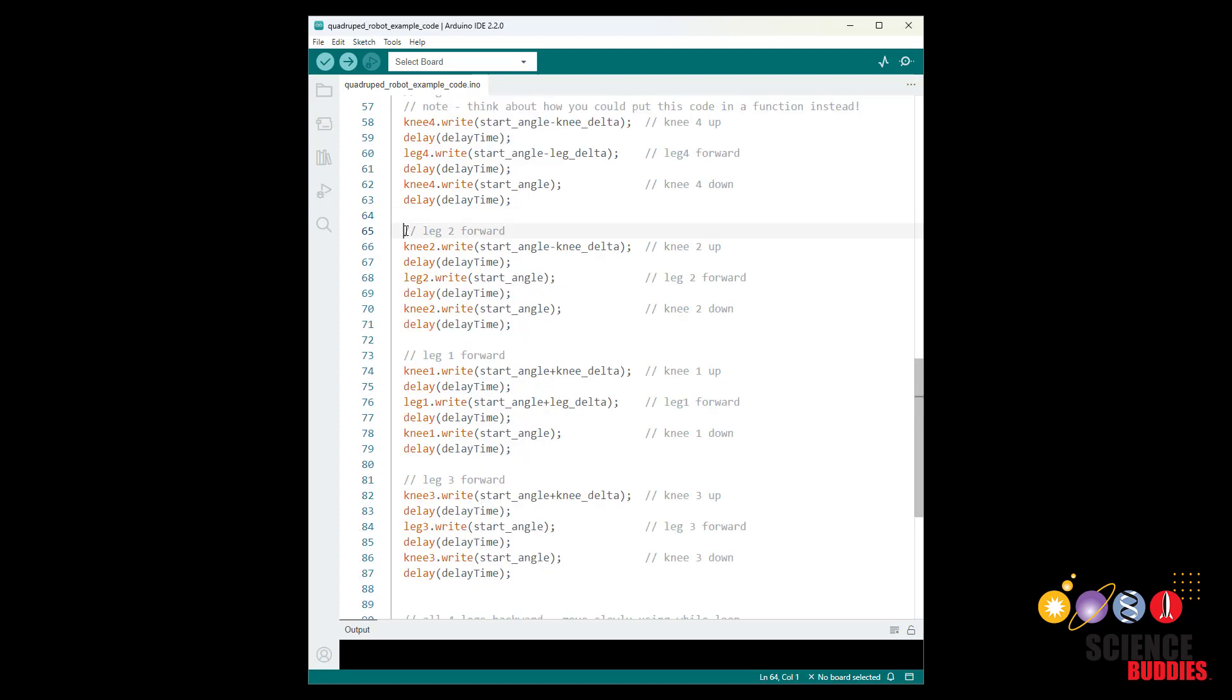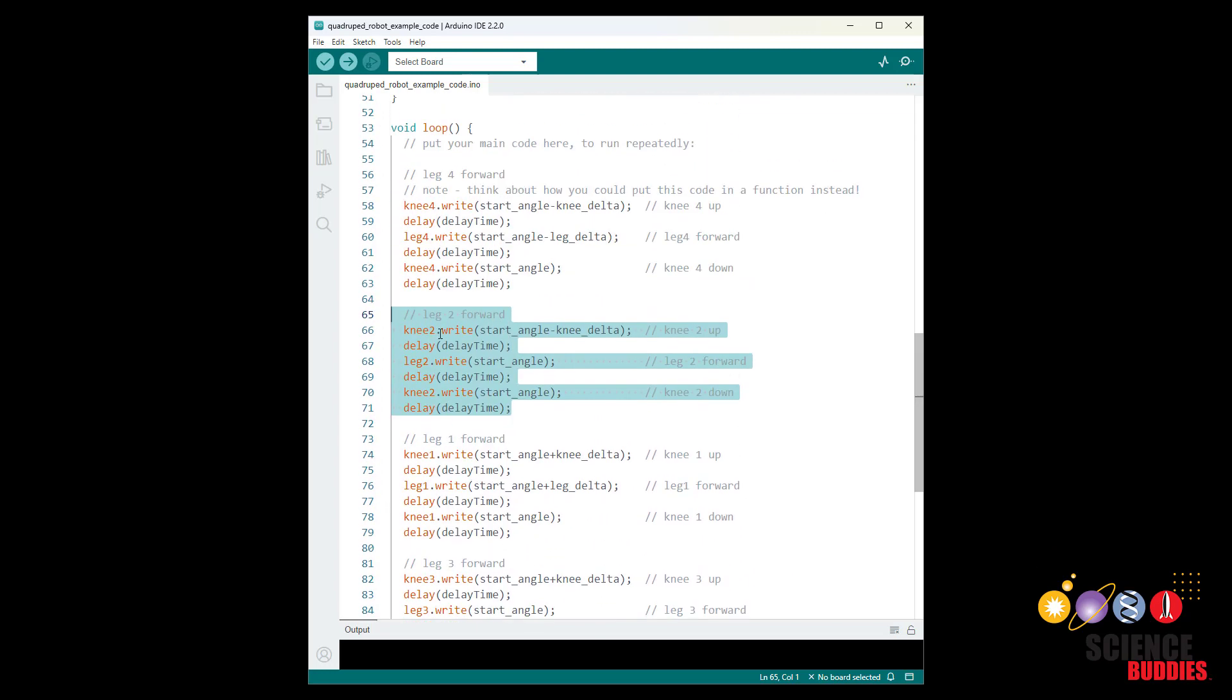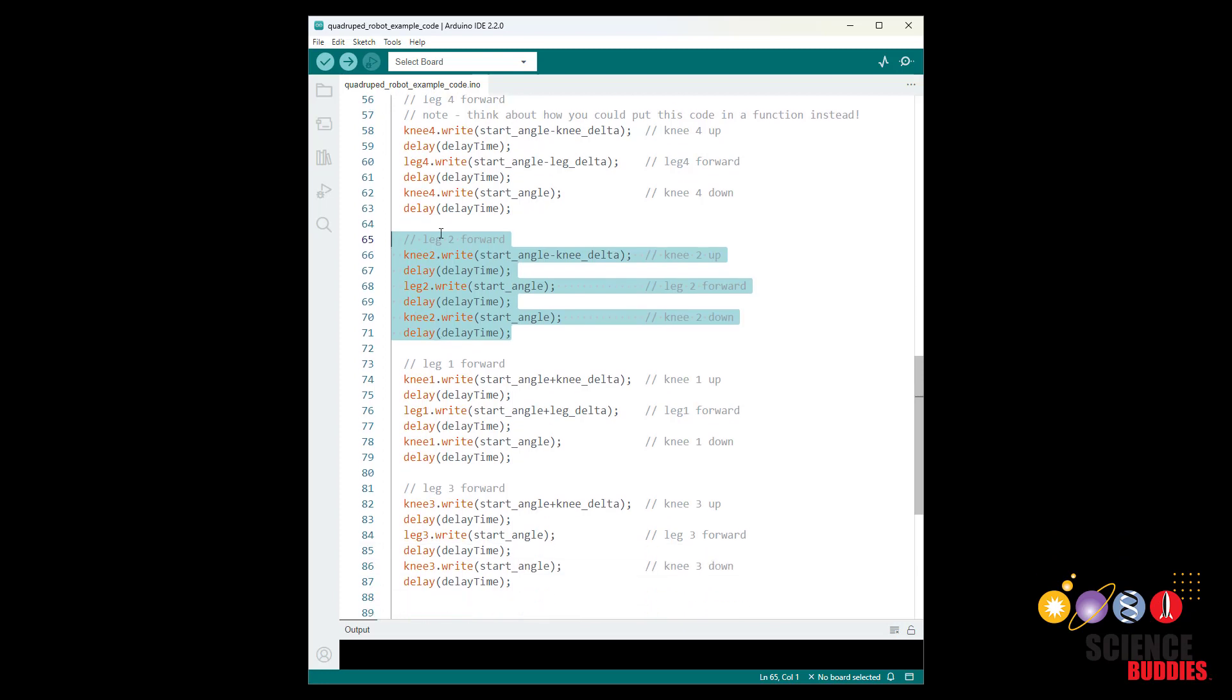Another note although I did not do it here you could make good use of functions to make your code neater. For example here I have several lines of code that move leg two forward by lifting the knee swinging the hip joint forward and then putting the knee back down. I could put all of this code into its own function and then just call a single line of code for that function inside my loop and that would keep everything in my loop function a little neater and make it easier to repeatedly call these motions if needed without copying and pasting the code.